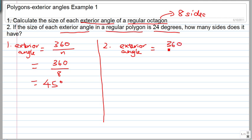If it is 24 degrees, then 24 equals 360 over n. Cross multiply: 24 times n on one side of the equation. Since 24 is over 1, you have 360 times 1 on the other side, which is 360.